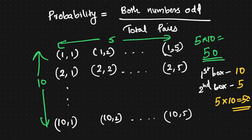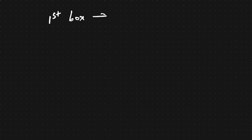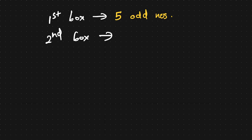We need to write both numbers in order. In the first box, the odd numbers from 1 to 10 are 1, 3, 5, 7, 9 — that means 5 odd numbers. In the second box, the odd numbers are 1, 3, 5 — that means 3 odd numbers.